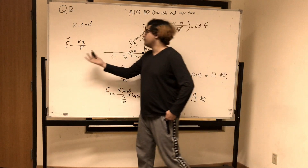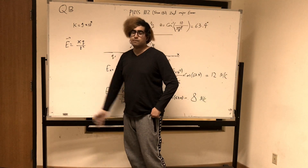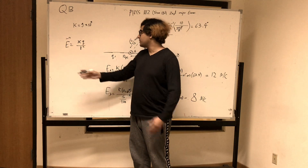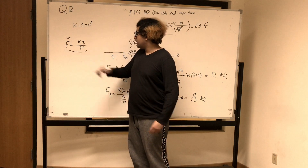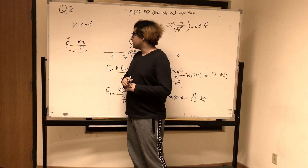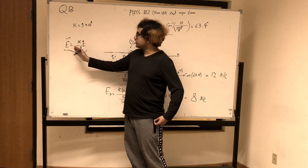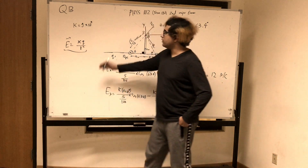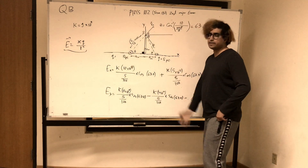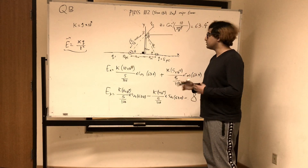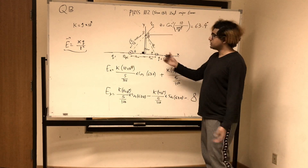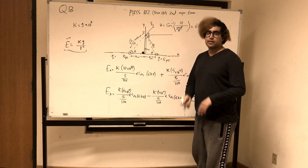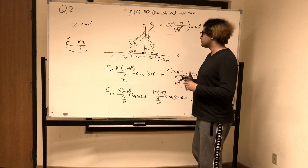We know that if you had to find the electric field due to a point charge, you use this equation: E is equal to k times q over r squared, where k is the constant and r is the separation between the charge and the point. We're interested to find the electric field at point E.